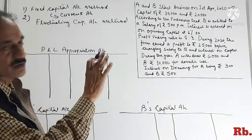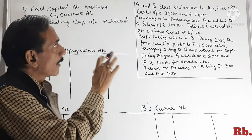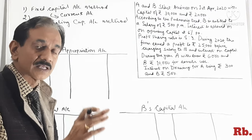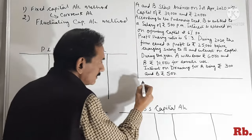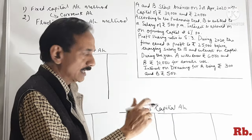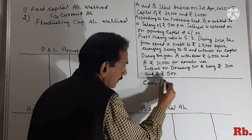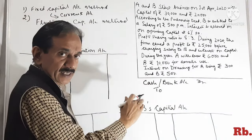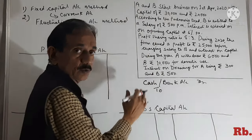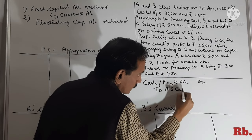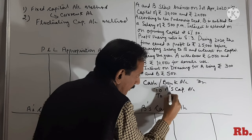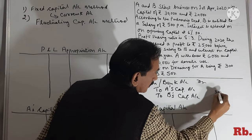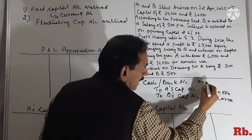A and B started business on 1st April 2020 with capital of Rs.30,000 and Rs.20,000. The journal entry will be: Cash/Bank account Dr. to A's Capital Account and B's Capital Account — Rs.30,000 and Rs.20,000 respectively, total Rs.50,000. A's capital account by bank account Rs.30,000, and B's capital account by bank account Rs.20,000.